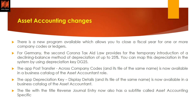The app 'Post Transfer Across Company Codes' is now available in the business catalog of the asset accountant role. Additionally, display depreciation key details are also available in the asset accountant role — generally, asset accountants were previously not able to view what percentage is configured and what parameters are set in a depreciation key. Also, the tile 'Reverse Journal Entry' now has a subtitle called 'asset accounting specific,' so when reversing journal entries you can specifically select asset-accounting-specific entries.